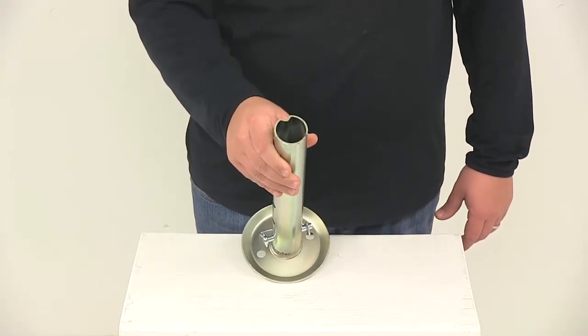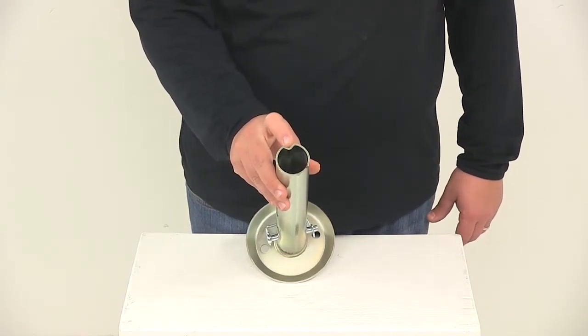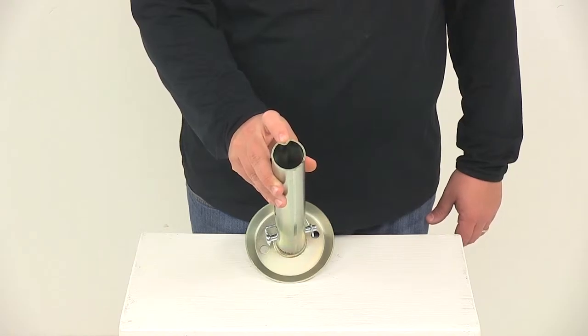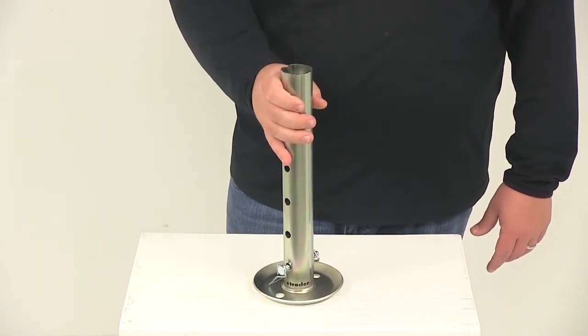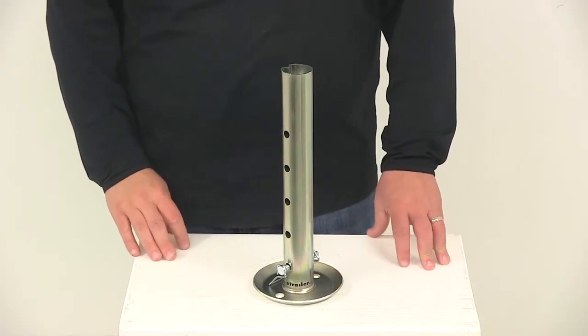This one is designed to work with trailer jacks with a two inch diameter inner tube. It's also got the indention that would line up with the indention in your trailer jack. It's made from steel construction with a zinc plated finish so it does a great job at resisting rusting and corrosion.